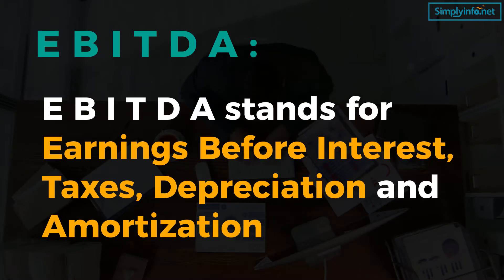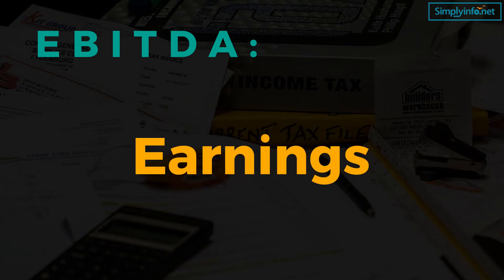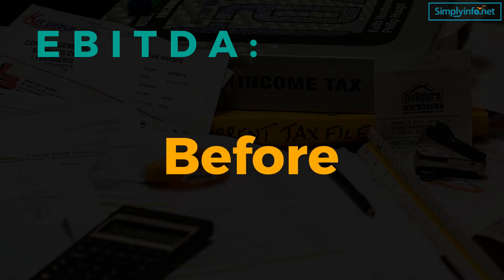The in-depth definition of the key terms in EBITDA: 1. Earnings — the net profit or net income of an organization. 2. Before — excludes certain factors from the equation. Since these are already subtracted from the net profits, the EBITDA calculation adds them back in, making the EBITDA total higher than the net profit.